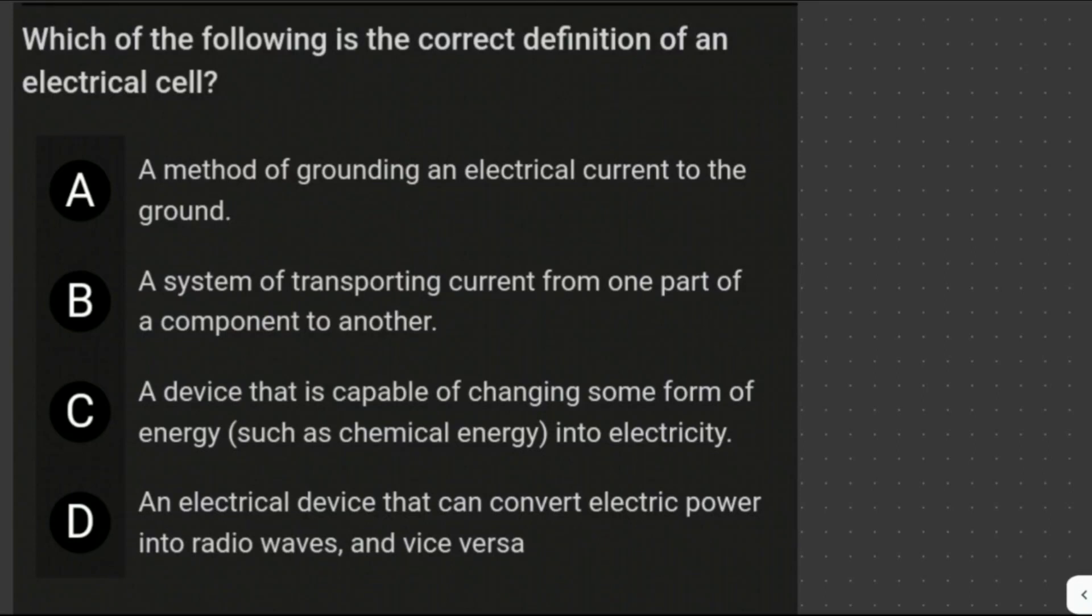Which of the following is the correct definition of an electrical cell? We have four choices: a method of grounding an electrical current to the ground, a system of transporting current from one part of a component to another, a device that is capable of changing some form of energy such as chemical energy into electricity, and an electrical device that can convert electric power into radio waves and vice versa. An electrical cell supplies electrical current, for example, batteries and solar cells. Among the choices, it should be letter C. A device that is capable of changing some form of energy into electricity.